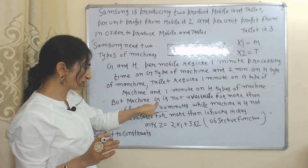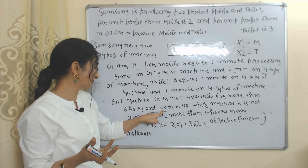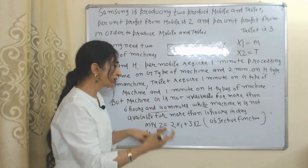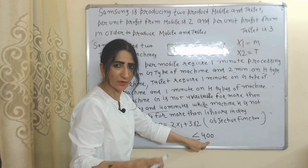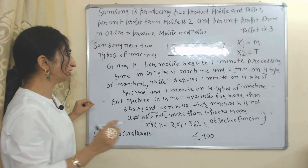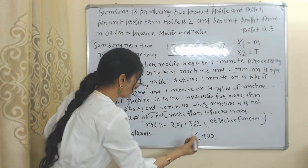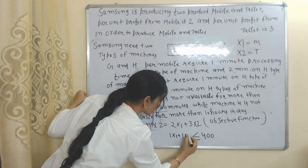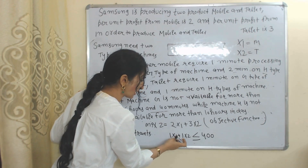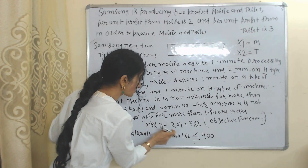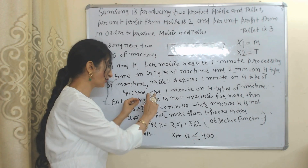Now we will formulate the constraints. First, the limitation of machine G — machine G is not available for more than 6 hours and 40 minutes. Converting 6 hours and 40 minutes into total minutes gives 400 minutes. Mobile needs one minute processing time on machine G and tablet also needs one minute processing time on machine G. So we can write: x1 + x2 ≤ 400. This is our first constraint representing the limitation of resource G.